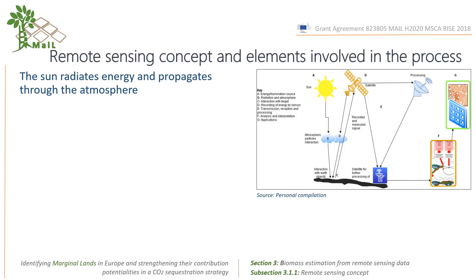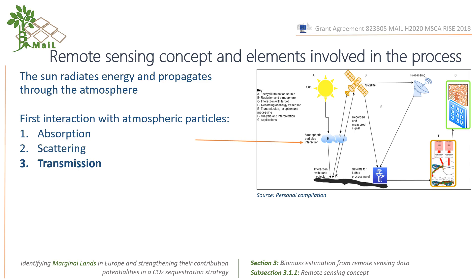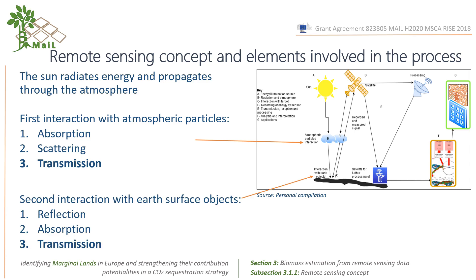In the diagram, the sun radiates energy and propagates through the atmosphere, which gets interacted with atmospheric particles, resulting in different mechanisms of interaction. Some of them will be absorbed, scattered, and transmitted through the atmosphere. The transmitted ones will be able to reach the Earth's surface and interact with Earth objects, leading to another form of interaction.